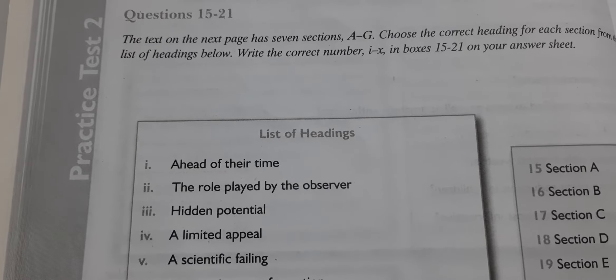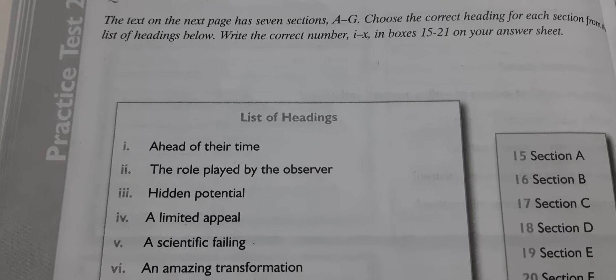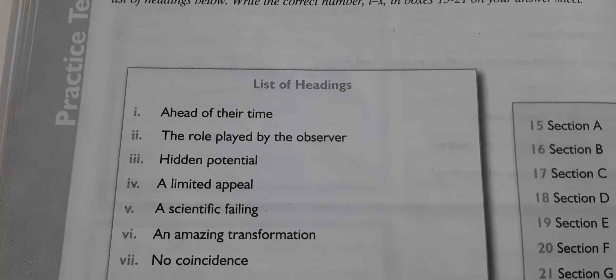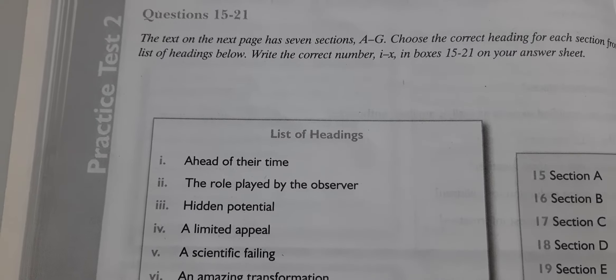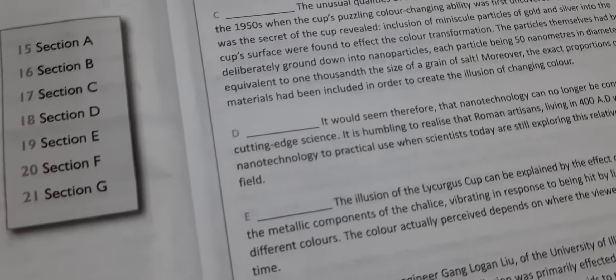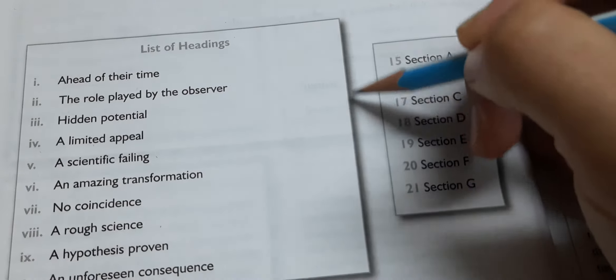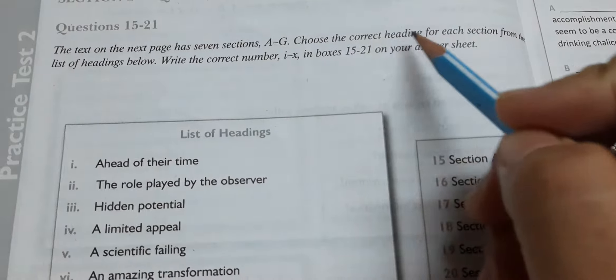Hello everyone. Today we are going to see IELTS reading section - how to solve list of headings. There are various strategies but this is the one which I feel is very easy and also gets results. So let's dive in and see the strategies. First, the question prompt will look like this: the text on the next page has 7 paragraphs A, B, C, D, and on another page you will have a list of headings.